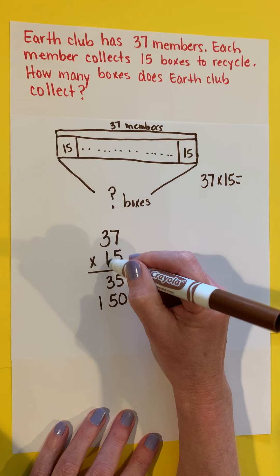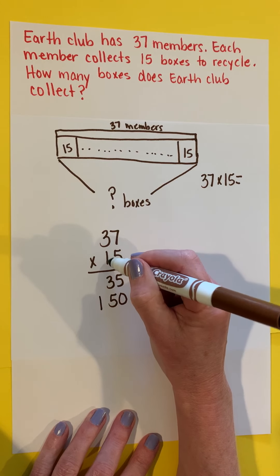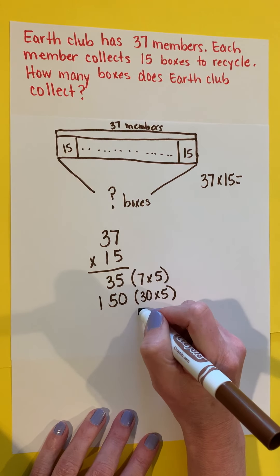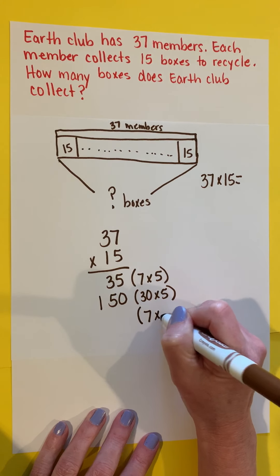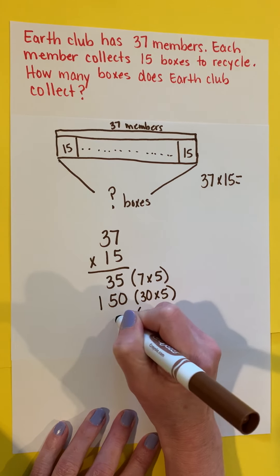Now I've got to remember that this is not just a one, this is actually a 10. So I've got to take seven multiplied by 10, and that would be 70.